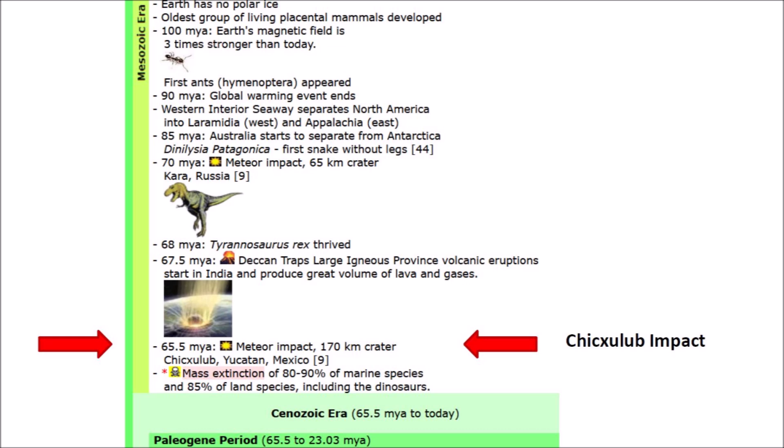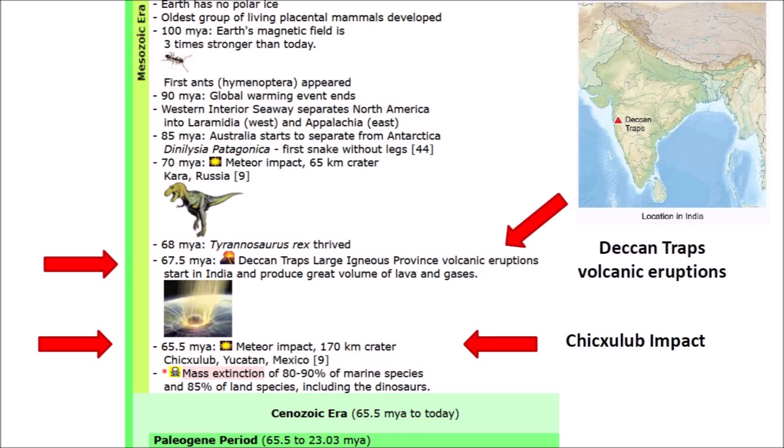The Chicxulub impact marks the transition between the Cretaceous period of the Mesozoic era and the Paleogene period of the Cenozoic era. A layer of iridium marks this boundary — dinosaur fossils are abundant below this layer, but not above it. Some scientists do not think the extraterrestrial impact alone was enough to cause the global extinction of the dinosaurs. The eruption of the Deccan Traps in India released large volumes of volcanic gases, particularly sulfur dioxide, that may have contributed to climate change, with an average temperature drop of about 2 degrees Celsius. Scientists have speculated that the Deccan Traps played a major role and that the Chicxulub impact was just the final blow.